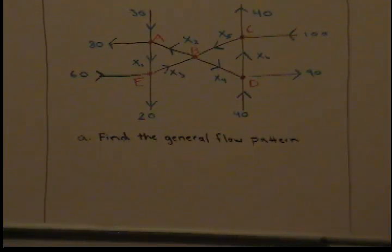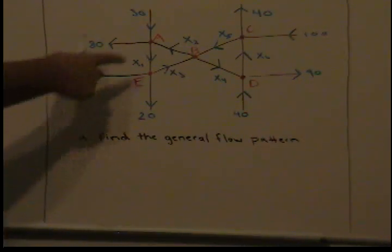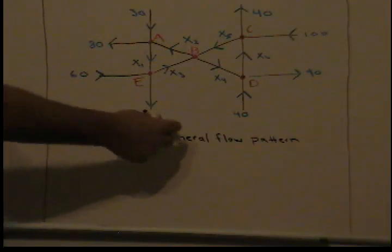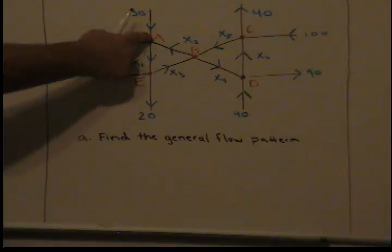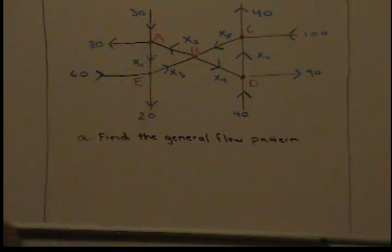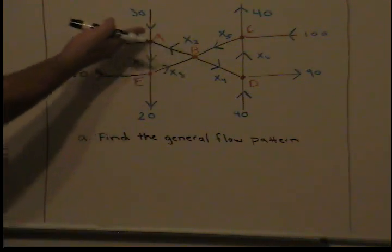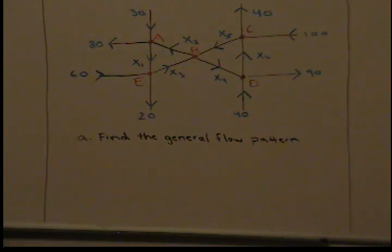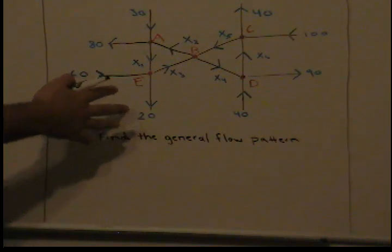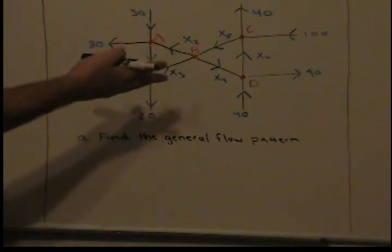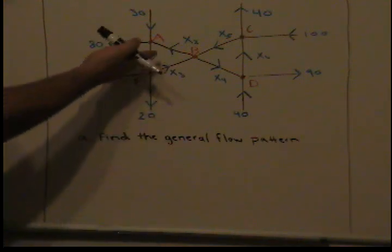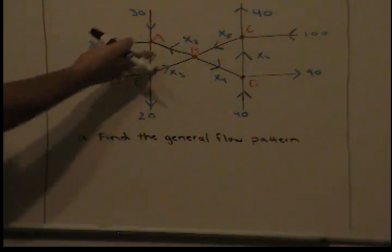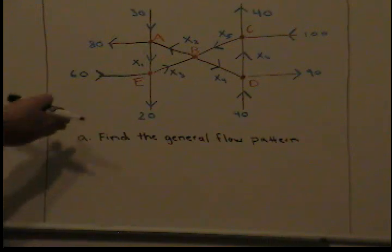Today we'll be solving this network diagram. We're going to try to find a general flow pattern. These dots labeled in red are called junctions or nodes, and these lines are called branches. It's going to be applied to many different fields of study — you can think of it as a sort of traffic flow where these are one-way streets and you're trying to find how many cars per mile come through each sector, such as x1, x2, x3.